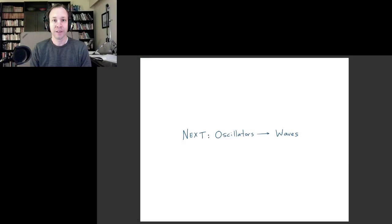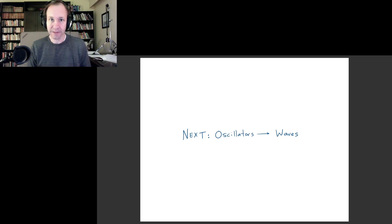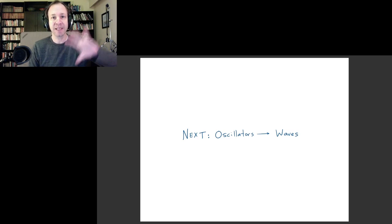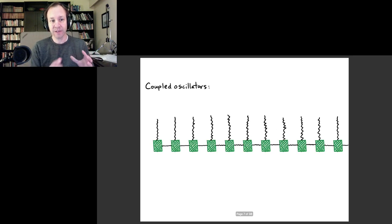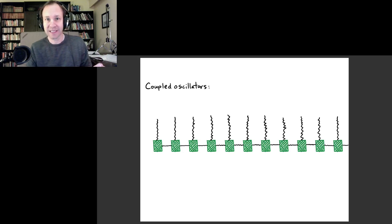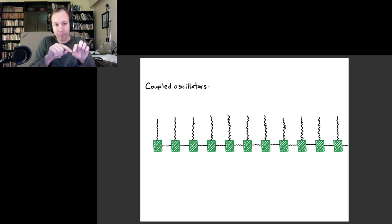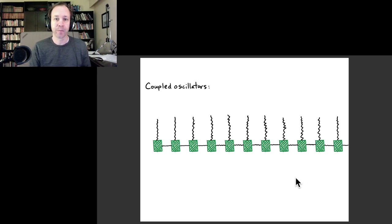Welcome to this video. Today we're going to use what we've learned about oscillators to start to understand the phenomenon of waves. These are closely connected, and to make the transition, I want to think about a system where we have our familiar mass connected to a spring, but now with lots of examples of that same system coupled together by extra little springs attached between the various masses.